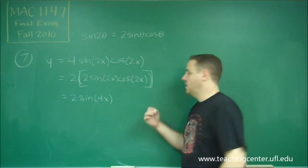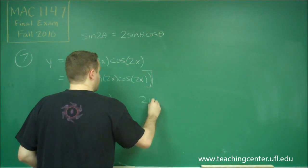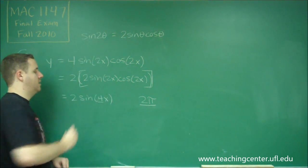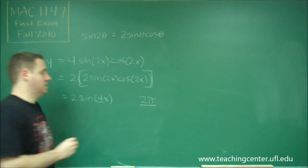For sine and cosine, that base period is 2 pi. And then you have to divide by the coefficient in front of the x here, which for us is 4.